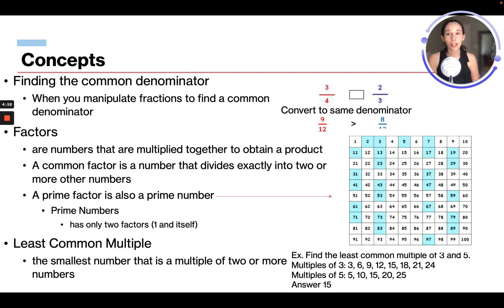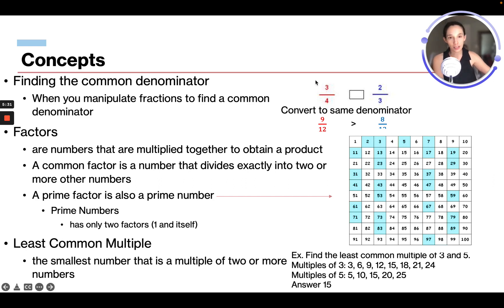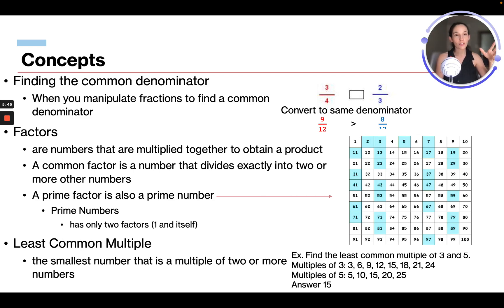Finding the common denominator. You can manipulate fractions to find a common denominator. When you manipulate a fraction, you have to multiply or divide both the numerator and the denominator by the same number. For example, 1 fifth multiplied by 5 over 5 gives us 5 over 25, so 1 fifth equals 5 over 25. Let's say we have 3 fourths — we want to know if it's greater than, equal to, or smaller than 2 thirds. You could try to picture circles with those fractions colored in, but it's tricky to tell which is bigger because they're close.